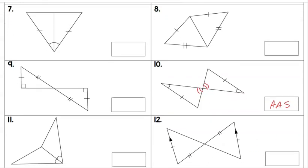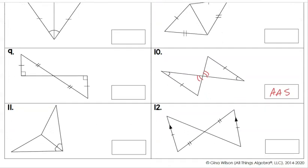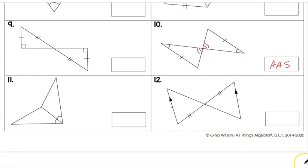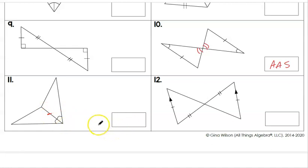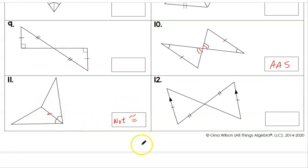For number eleven, we're told about one pair of congruent angles between these two triangles and one congruent side, but that's really all we know. With that limited information we would have to say these are not congruent.